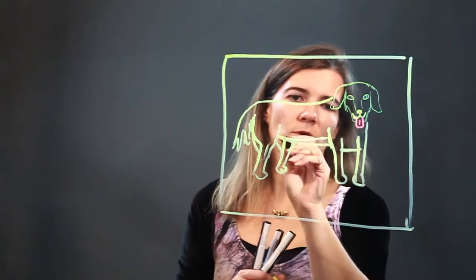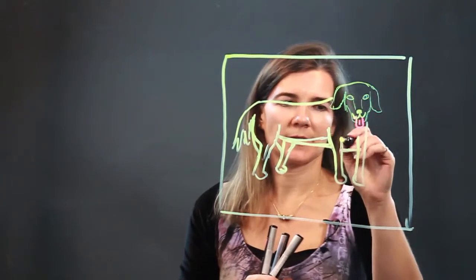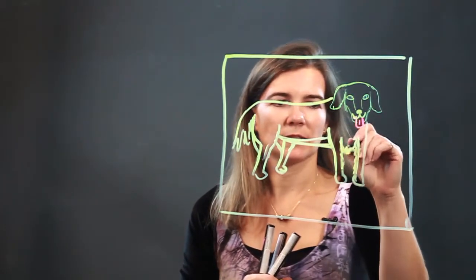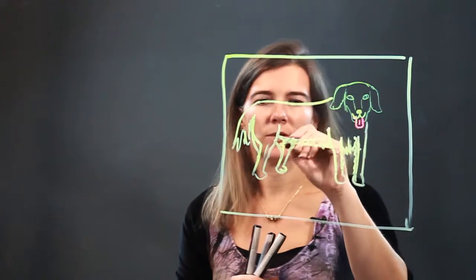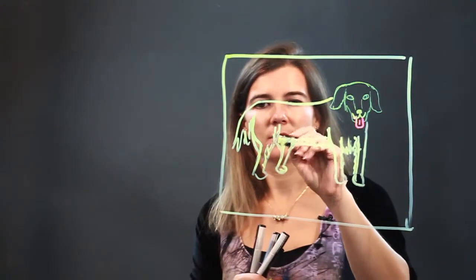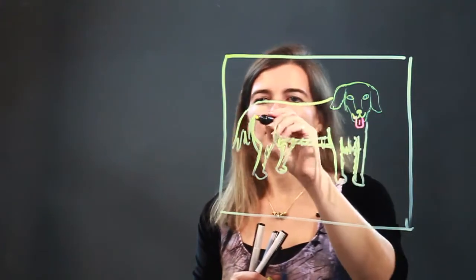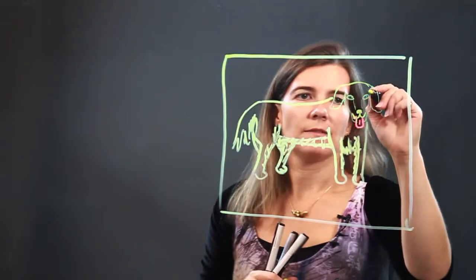And then of course the body is going to be lower like this. And then you can add fur. Now do some jagged lines to show that this guy is a furry golden. Alright, and then of course...